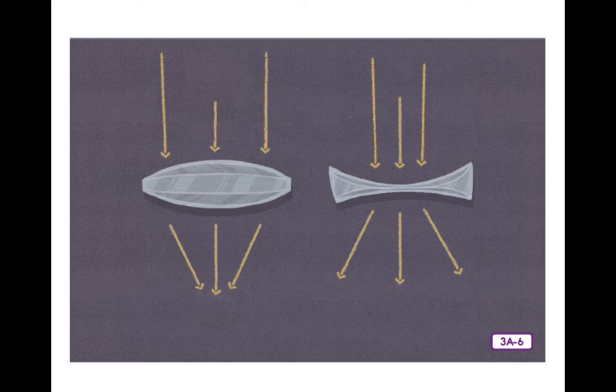'On the other hand, a concave lens curves inward like a cave and is thinner in the middle than at the edges. Light rays passing through a concave lens are forced to change direction and move away from each other, making things look smaller. Cameras use lenses to focus the light rays inside the camera to record an image. Lenses are also used in security cameras and peepholes in doors to help the background view look wider and easier to see.'